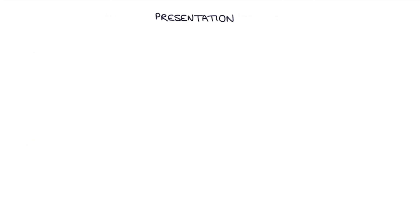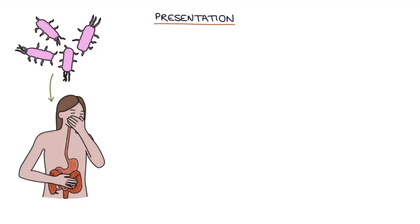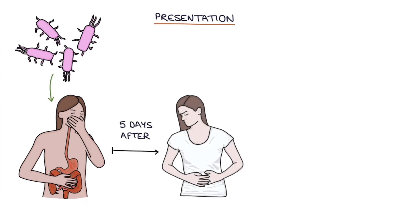So how does it present? Well, E. coli O157 causes a brief gastroenteritis, often with bloody diarrhea. And about five days after the diarrhea, the person will start displaying symptoms of hemolytic uremic syndrome.